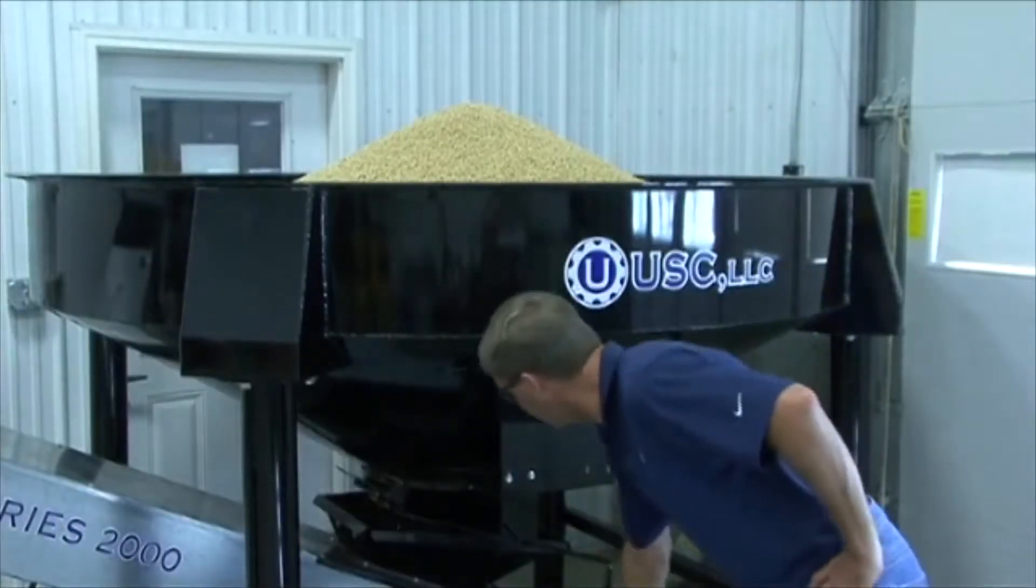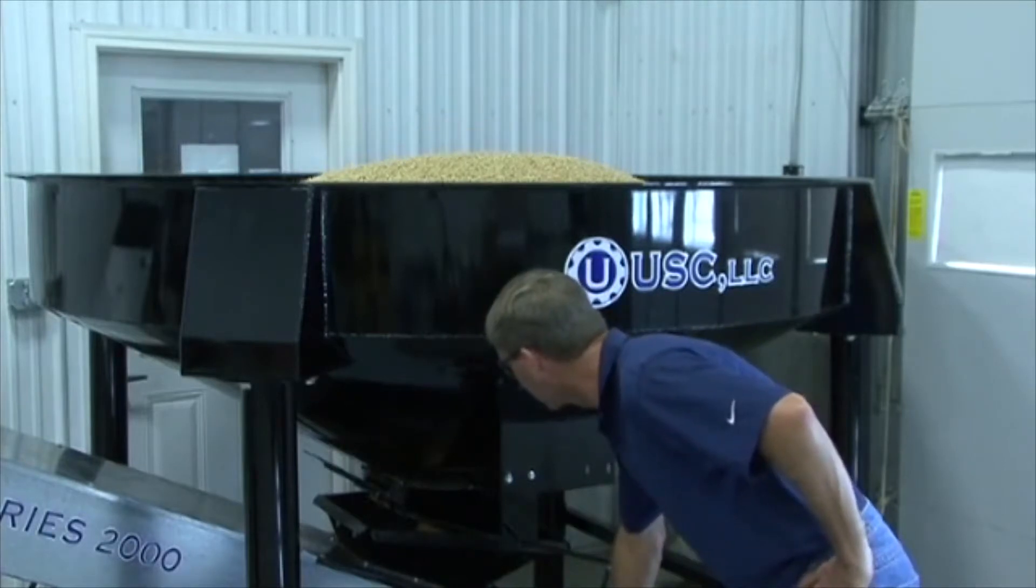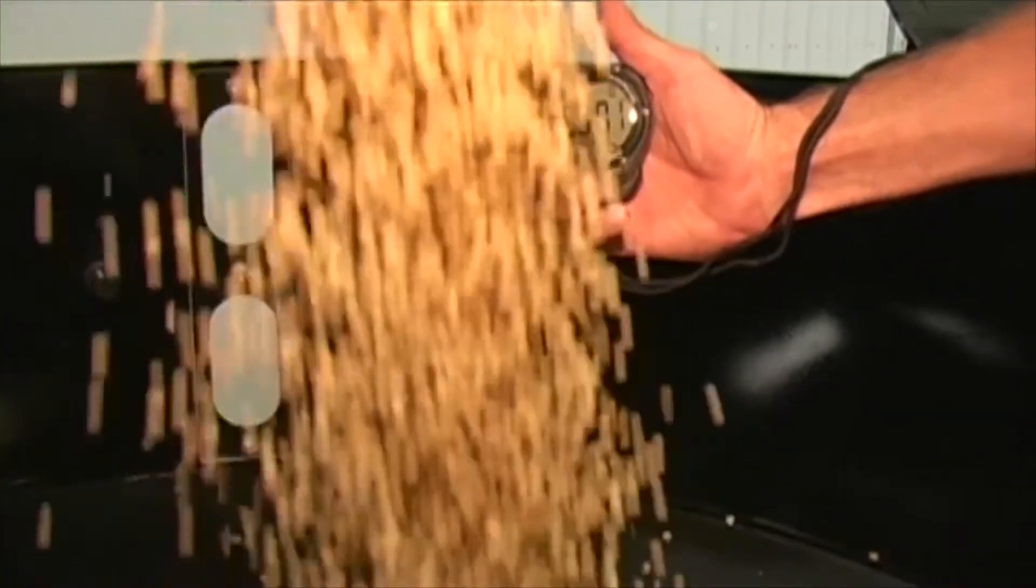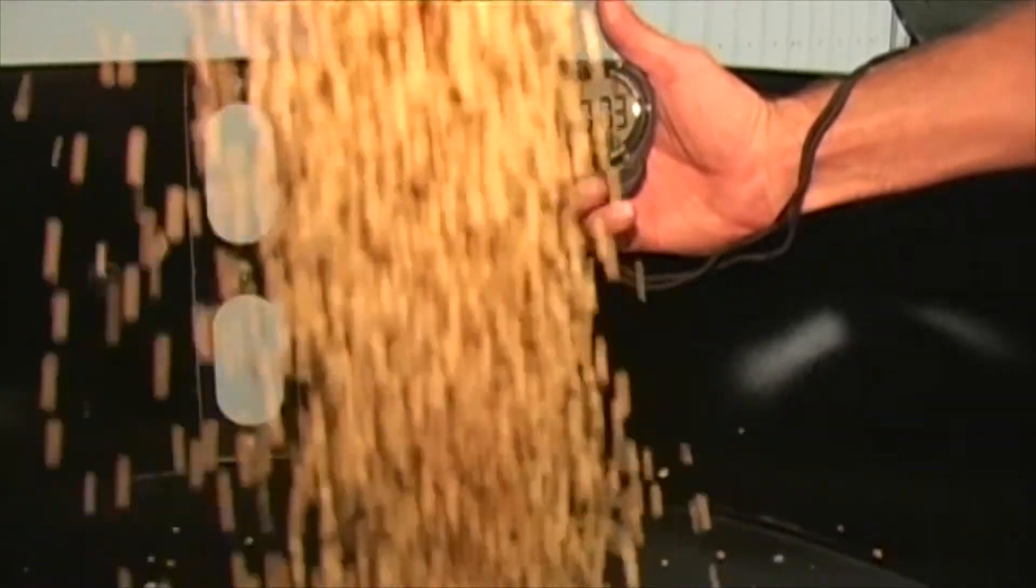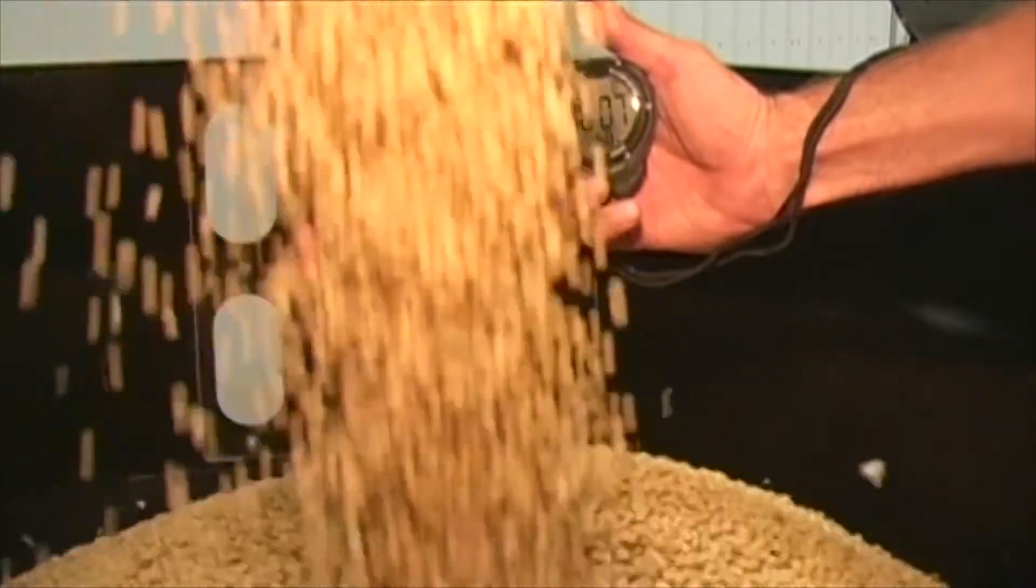Then begin feeding seed into the inlet conveyor. This will fill the supply hopper on the treater. Using a stopwatch, begin timing as soon as seed drops into the seed treater. Continue timing your entire known weight of seed. Keep the supply hopper full to ensure a consistent flow of seed.